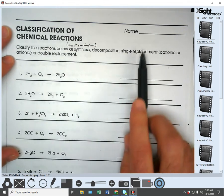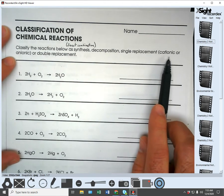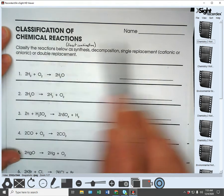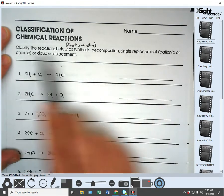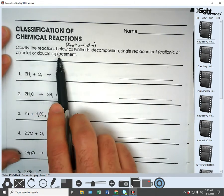Decomposition, single replacement, and you have to tell if it's cationic or anionic. So either cationic single replacement or anionic single replacement or double replacement.